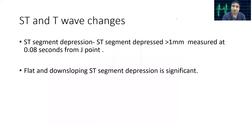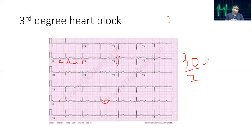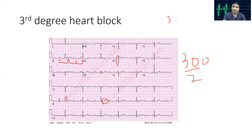To revise: First degree heart block is prolongation of the PR interval more than 200 milliseconds. Second degree heart block has two types — Mobitz type 1 has successive PR prolongation and sudden QRS drop; Mobitz type 2 has normally conducted P waves and sudden QRS loss. In third degree heart block, there is independent atrial and ventricular depolarization with differing rates, and we may see capture beats and fusion beats.